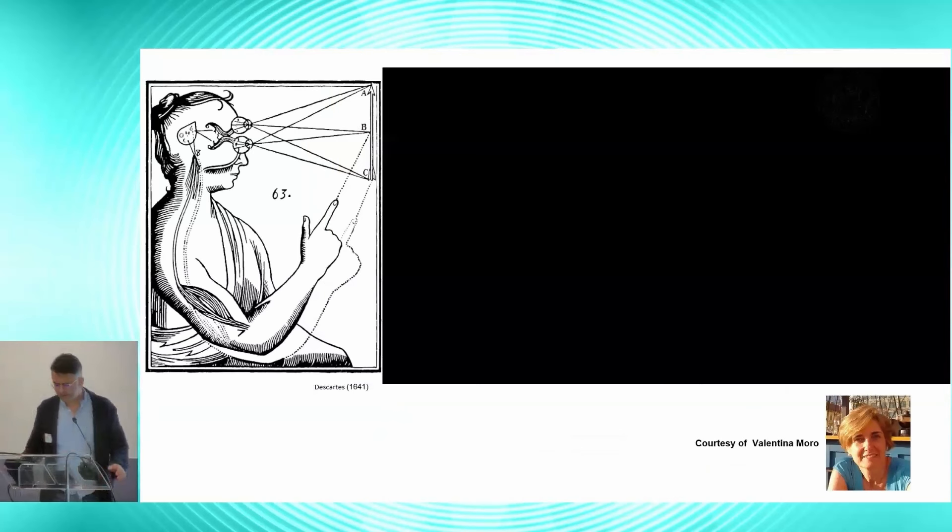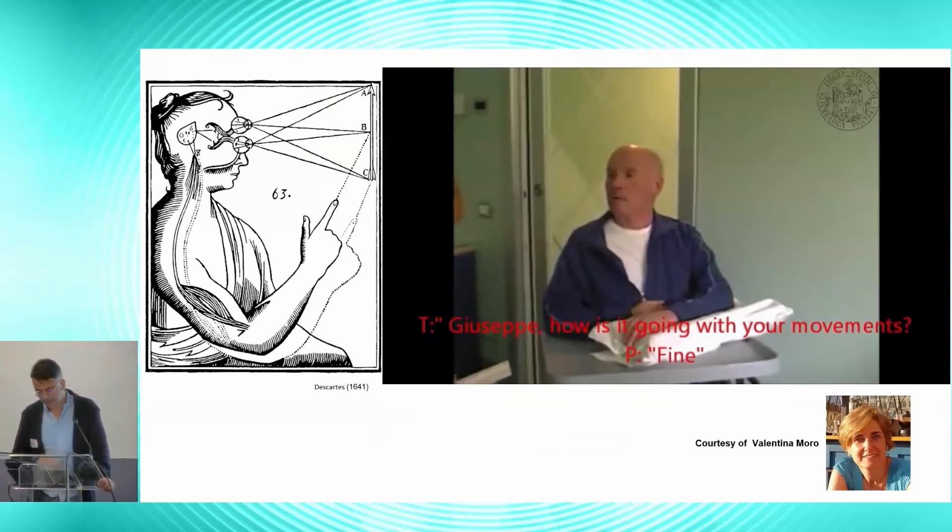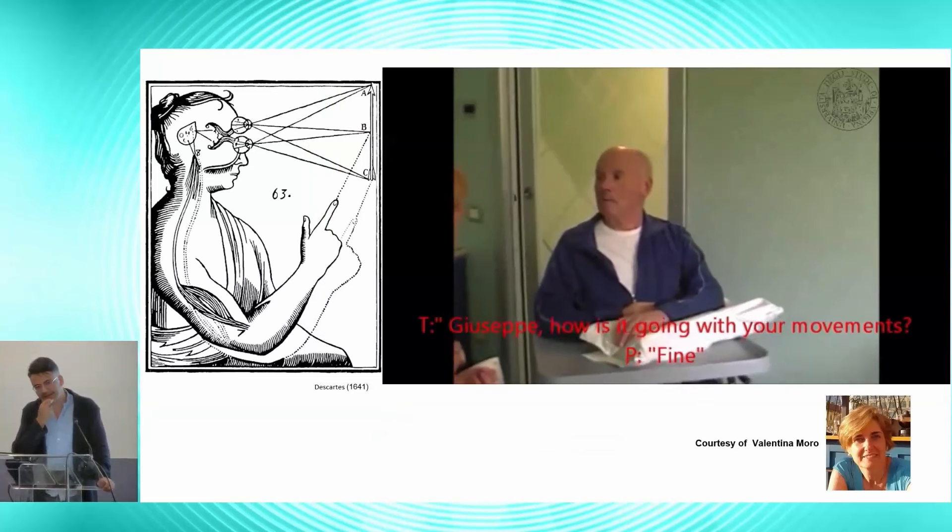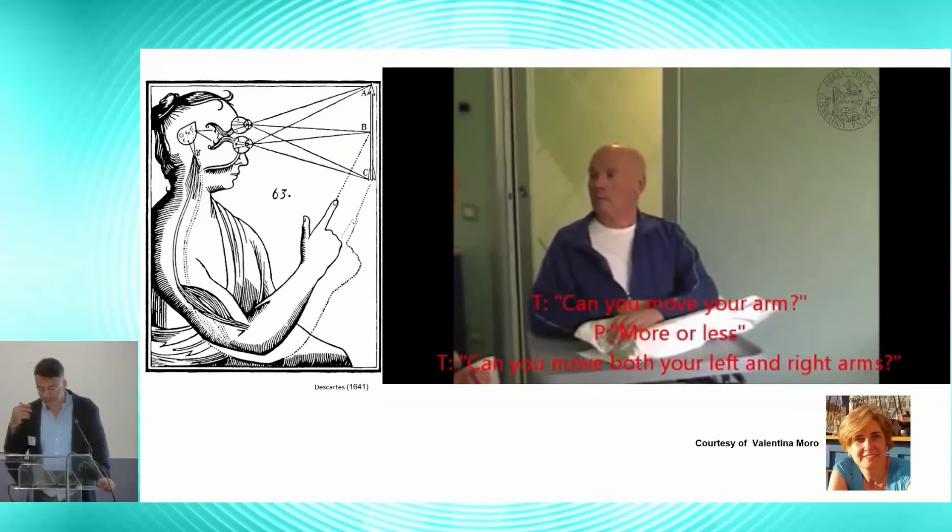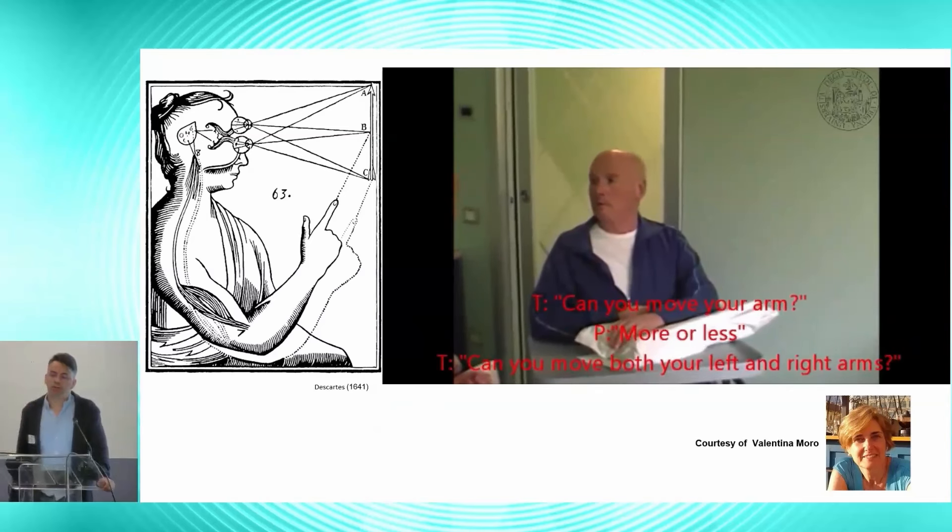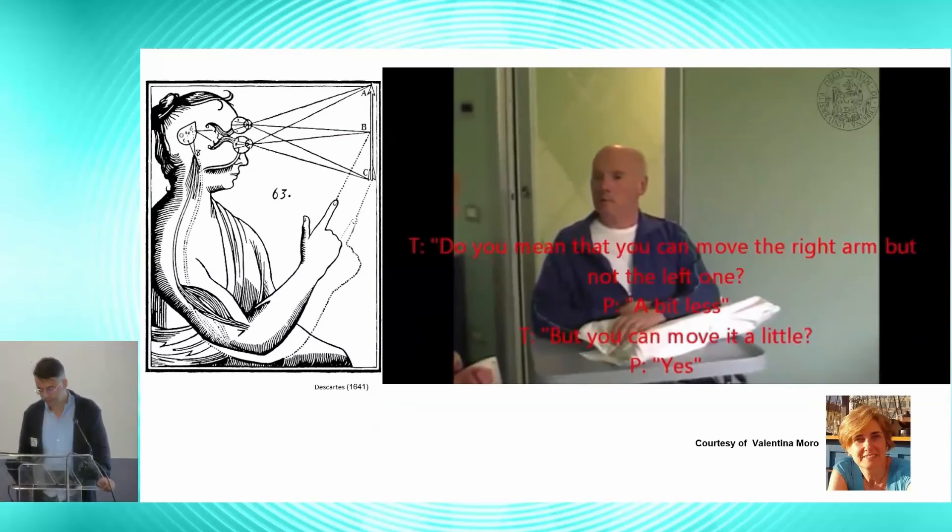So this is a method of looking at disconnection, and I'll give you an example in a group patient studies on what we can do. We've been studying anosognosia for hemiplegia, which is a typical neurological behavioral manifestation where patients are not aware of their motor impairment. So that's the case of Giuseppe.